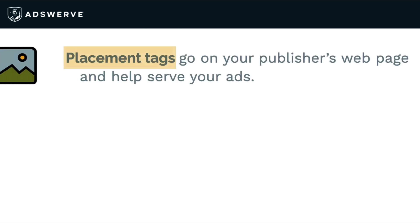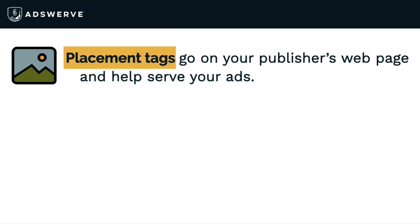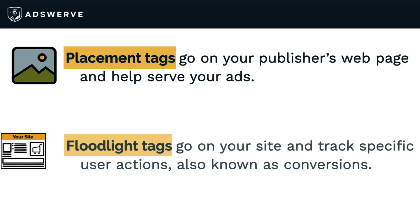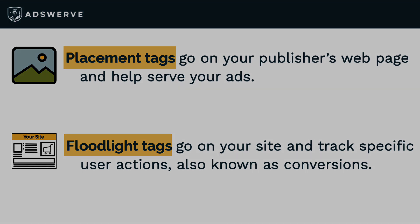To summarize: placement tags go on your publisher's webpage and help serve your ads. Floodlight tags go on your site and track specific user actions, also known as conversions. Now that you understand the basic difference between placement tags and floodlight tags, watch the next video to learn how to build things in CM360.